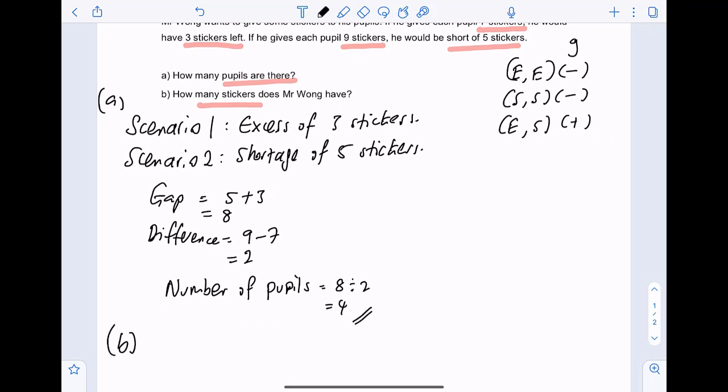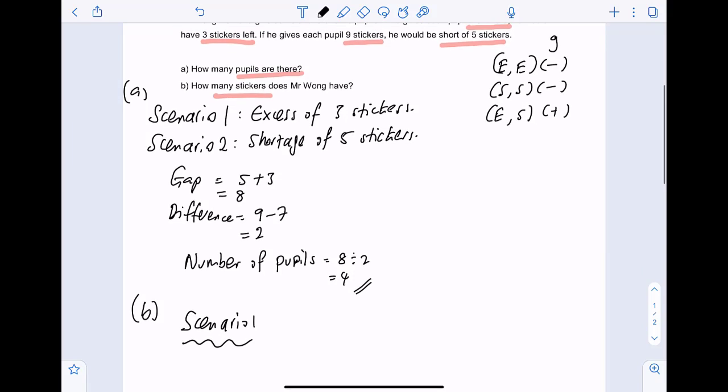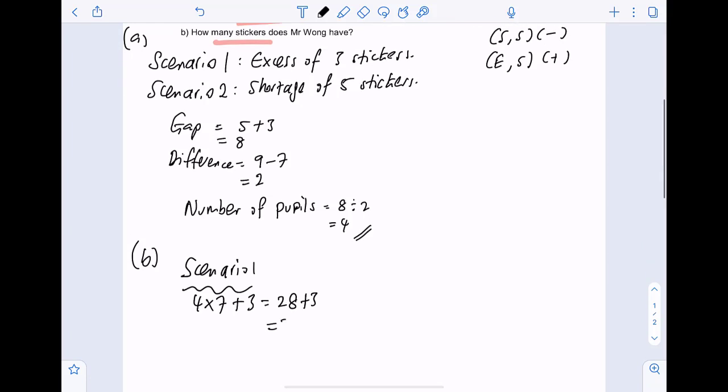Now, for part B, how many stickers does Mr. Wong have? To do this, we can use either of the scenario. Let's say we want to use scenario one. Scenario one, each pupil got seven stickers, and he will have three stickers left. So, four times seven, and he will have three left. So, twenty-eight plus three. This will be equals to thirty-one.